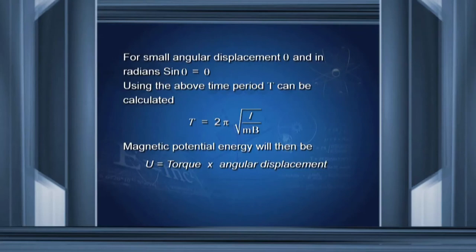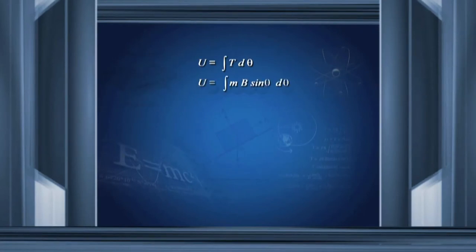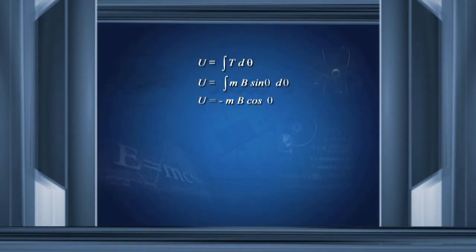What is the energy stored in the dipole when it has deflected from its mean position? Energy is work done — torque multiplied by the angular displacement. So U is the integral of τ dθ, which gives the integral of MB sinθ dθ, and this equals −MB cosθ. So this energy is a dot product of the two vectors M, the magnetic moment, and B, the external magnetic field.